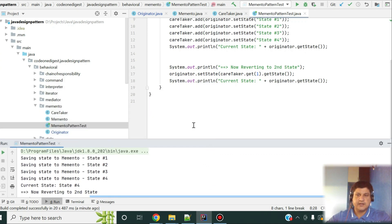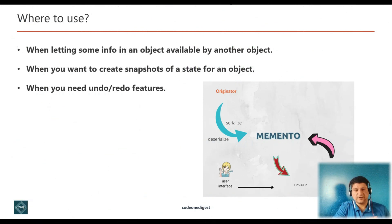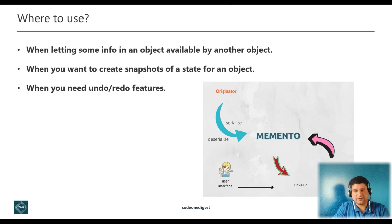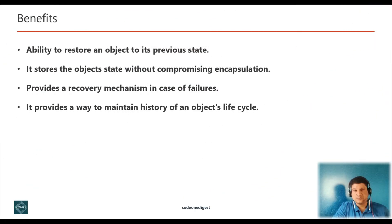You keep saving the state of your originator object and you can revert back anytime to a previous state. Now, where to use the Memento design pattern? You can use it when you want to make some information in an object available to another object, when you want to create a snapshot of an object's states, and when you need an undo/redo feature in your application.